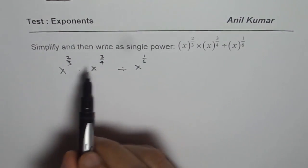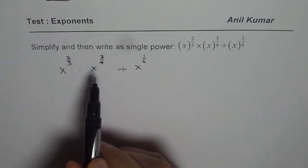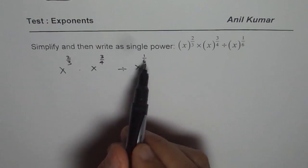So the rule is whenever you are multiplying with the same base, exponents get added, and when you divide they get subtracted.